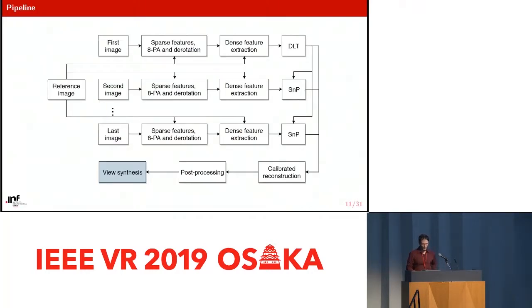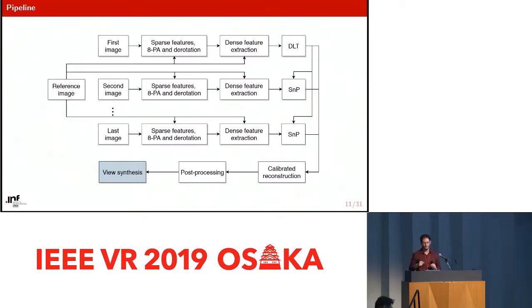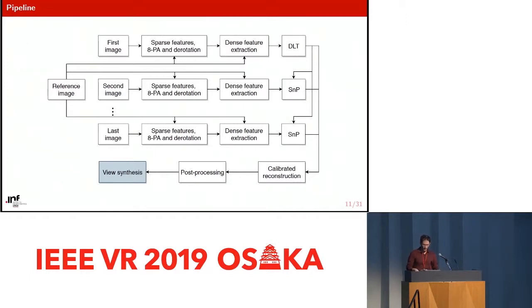This is our pipeline. We have a reference image and other supporting images. We compute sparse features, extract the five degrees of freedom pose, and then derotate the images. This allows us to apply a dense optical flow algorithm, and then we can compute both the 3D points and the six degrees of freedom poses, which are then post-processed for the applications.